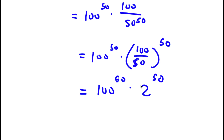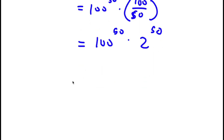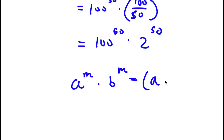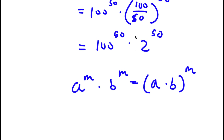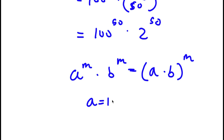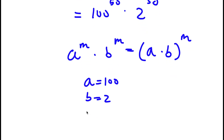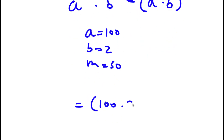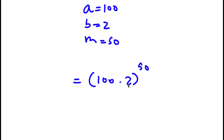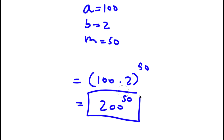Using the property that a to the power of m times b to the power of m equals a times b to the power of m, I can combine 100 to the power of 50 times 2 to the power of 50 as 100 times 2 to the power of 50. Since 100 times 2 is 200, I'm left with 200 to the power of 50. So this is my answer.